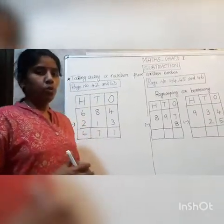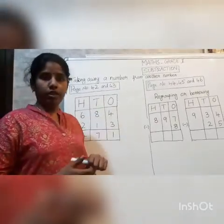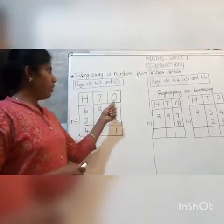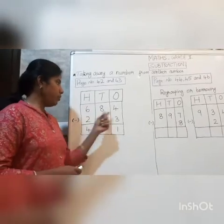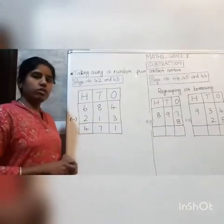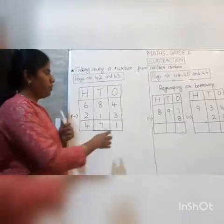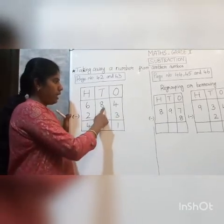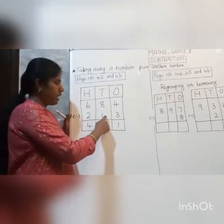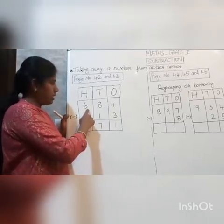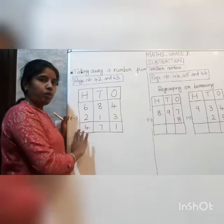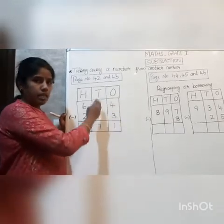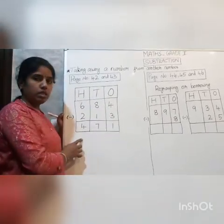Moving on to pages 42 and 43, we have subtraction of two three-digit numbers. We have ones, tens, and hundreds. This is also without borrowing. We start from the ones place: 4 minus 3 is 1, then tens place: 8 minus 1 is 7, and hundreds place: 6 minus 2 is 4. We just subtract the numbers in the respective place values and write the answers down.